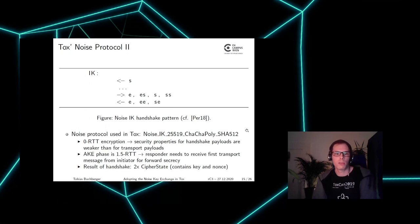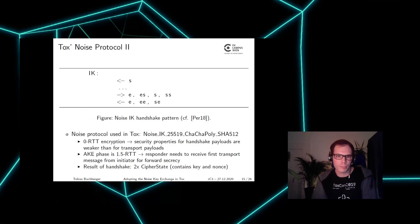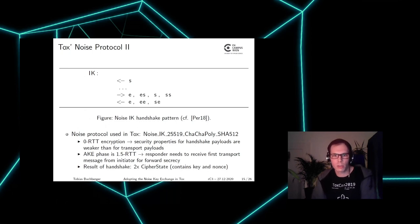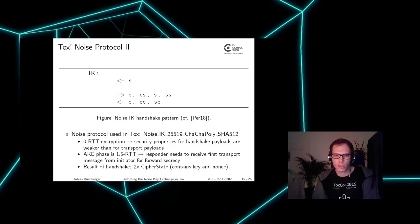This Noise protocol provides zero round-trip encryption, meaning the handshake messages already contain encrypted payloads, though the security properties for handshake payloads are weaker than for transport payloads. The handshake phase is 1.5 round-trip time — one message from the initiator and one from the responder — because the responder needs to receive the first transport message from the initiator to be assured of forward secrecy. The result of a successful handshake is two cipher state objects, each containing a key for symmetric encryption and the corresponding nonce.